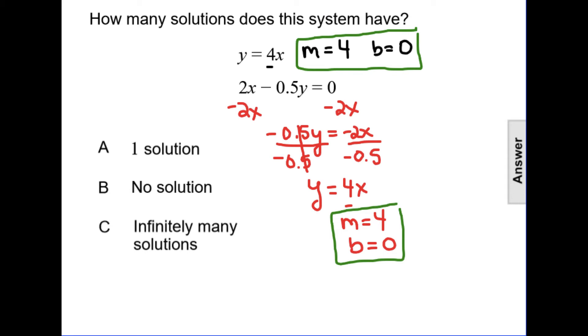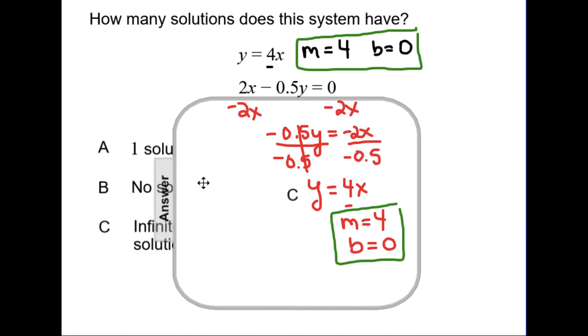They're going to overlap and intersect everywhere, infinitely many points. So the solution is C, infinitely many solutions.